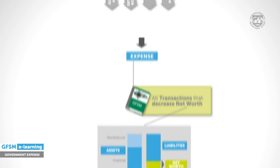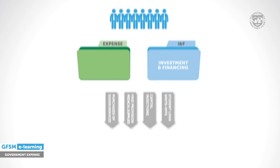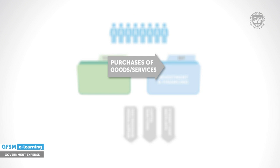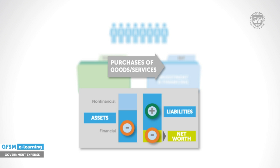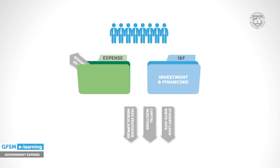Let's look at the examples. When considering transactions related to the purchase of goods and services, the staff has an easy time. When goods and services are paid out of cash, assets decrease. If the purchase is financed through a trade credit, liabilities increase. In both cases, net worth clearly decreases because either assets decrease or liabilities increase. Thus, an expense is recorded.